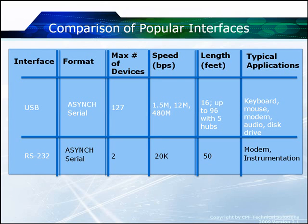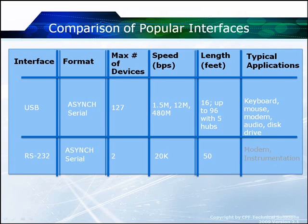RS232 is an old serial protocol — asynchronous and serial. The maximum number of devices is just 2, with a maximum speed of 20 kilobits per second. The length is up to 50 feet, and it's mainly used for modem connectivity and instrumentation connectivity.